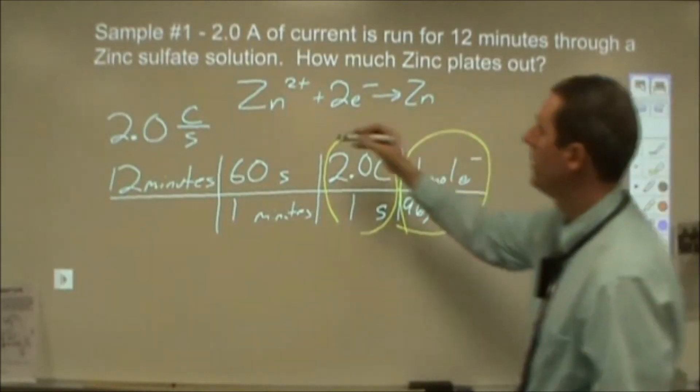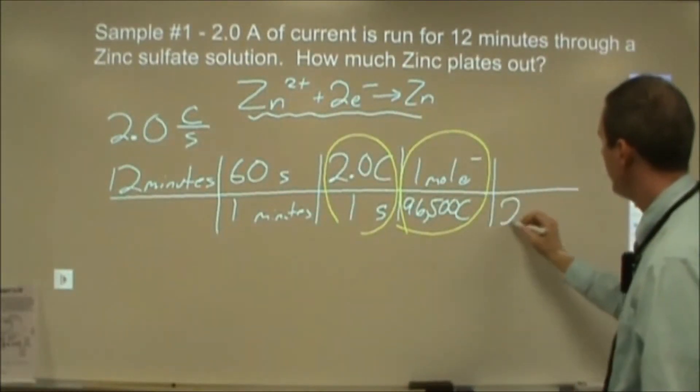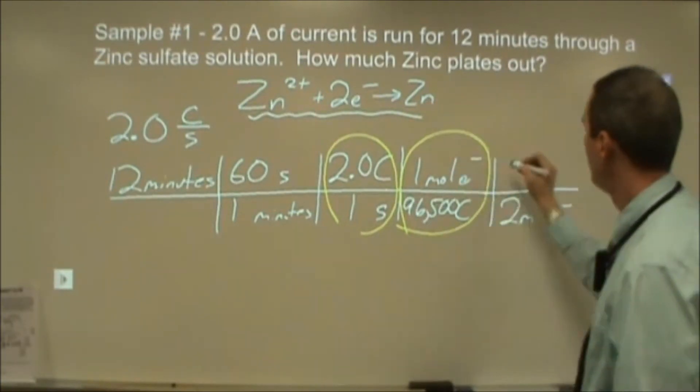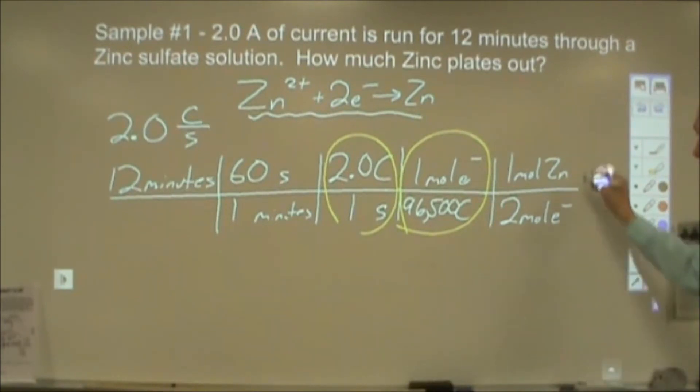Now at this point, I want to start using this balanced reaction. So now I'm going to say for every two moles of electrons that I will get one mole of zinc metal plated out. And then I'm going to turn that into grams just for fun. So one mole of zinc metal gives me 65.39 grams of zinc.